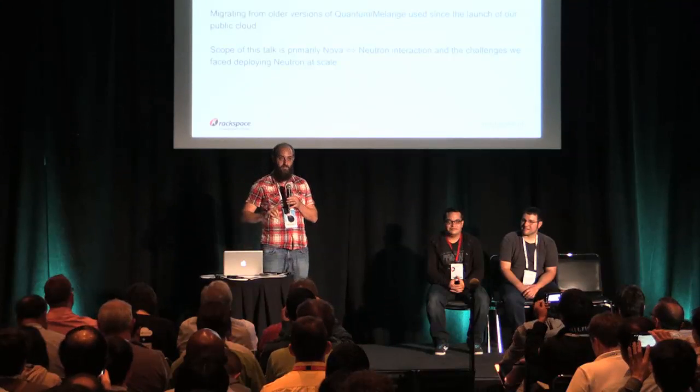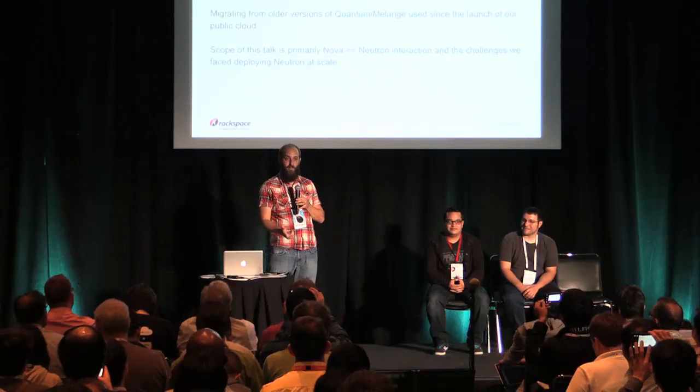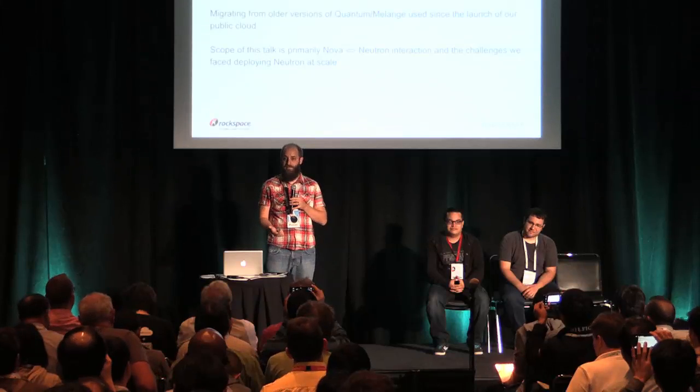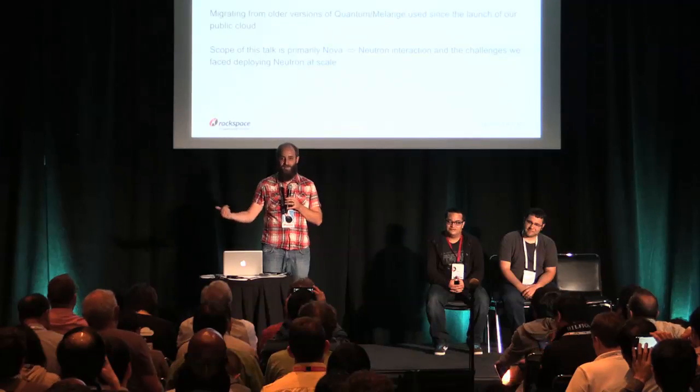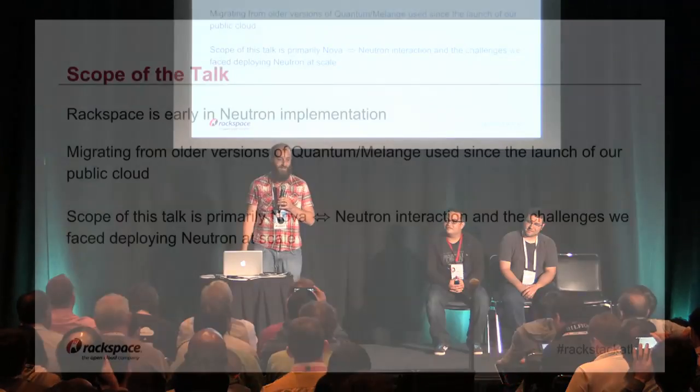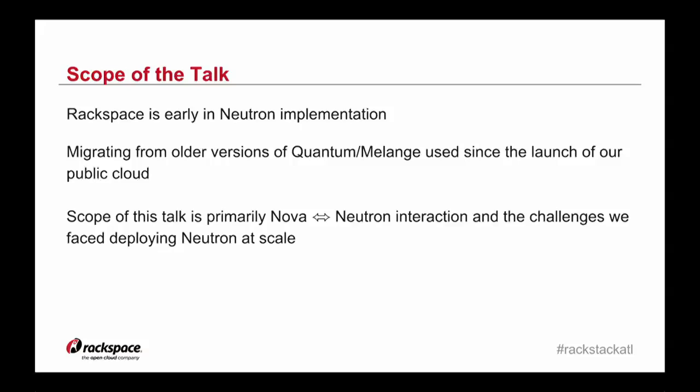Right now Rackspace is still fairly early in our deployment. We've done about half the DCs and we'll continue the other half when we get back from the summit. But we're kind of moving from early versions of Quantum and Melange, moving them full into Neutron. Primarily we want to focus this talk on the interaction between Nova and Neutron and some of those things that can get out of control when you operate at a big scale.